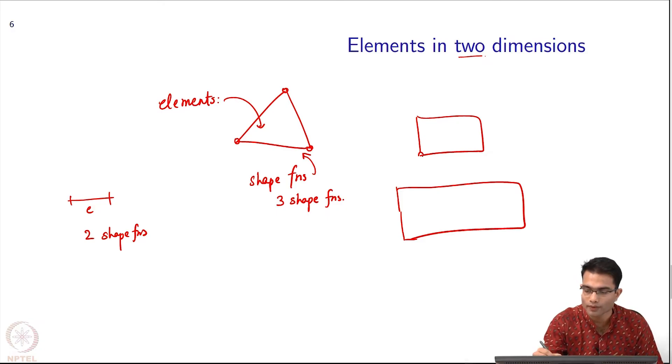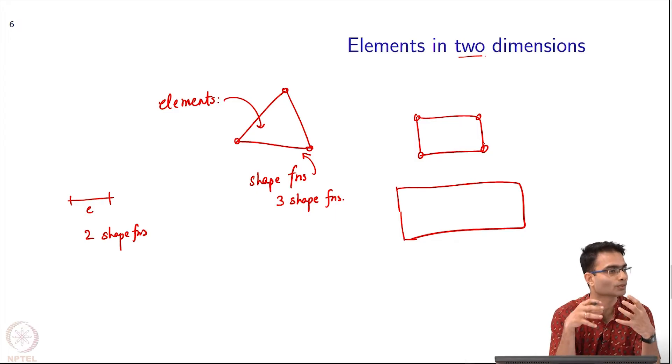When I go to a rectangle, I can conceivably have four shape functions. What we are doing is we are bringing in more and more flexibility into modeling the unknown by having these kinds of shape functions.